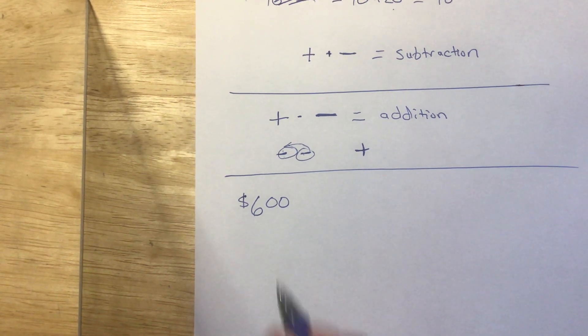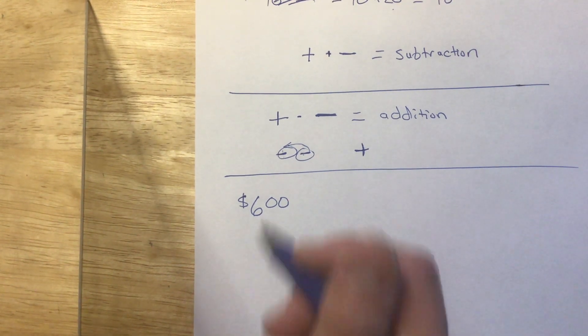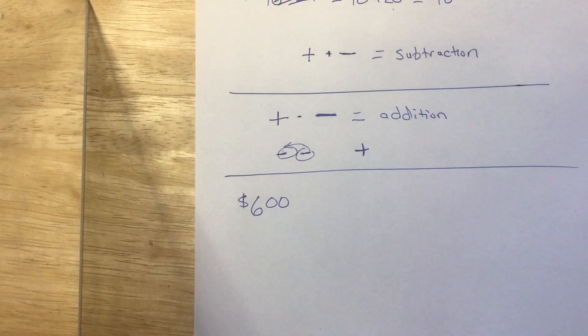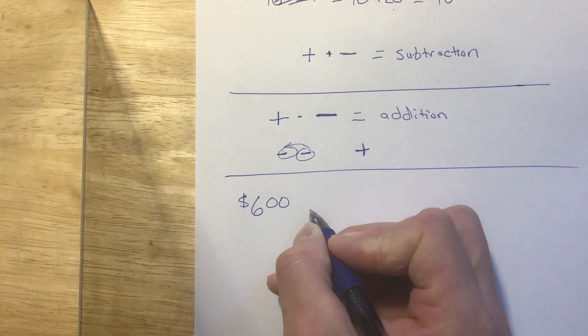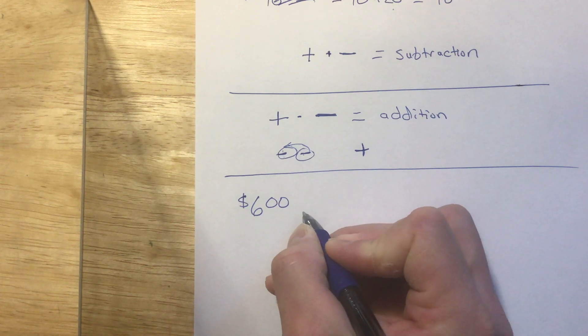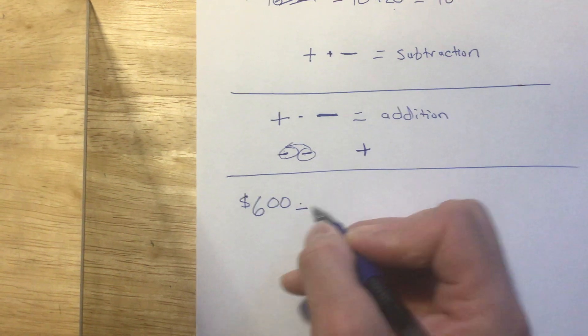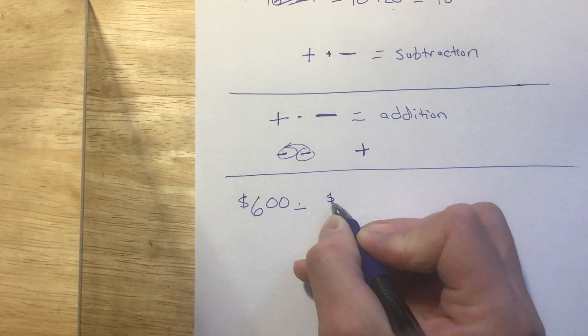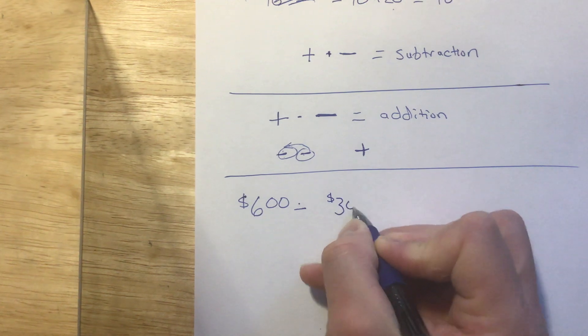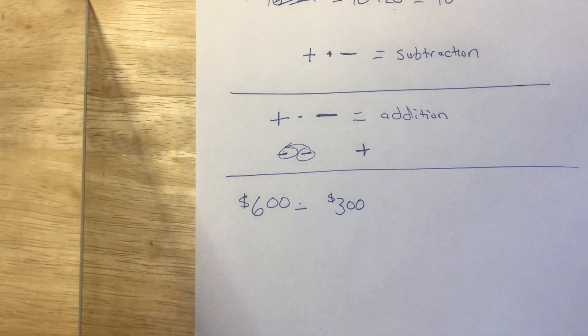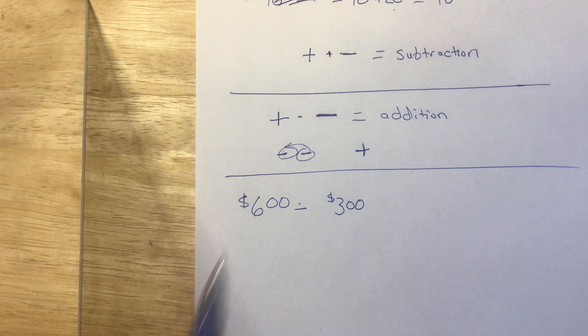Now, you might be tempted to go spend that on a bunch of junk. You might buy a bunch of video games and some new shoes and this and that. Just blow all that money. But you've got to keep in mind that you still have to pay rent that month.